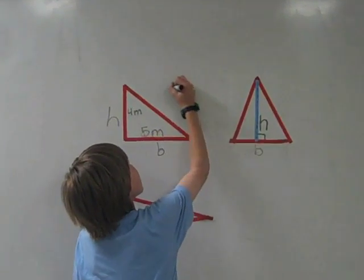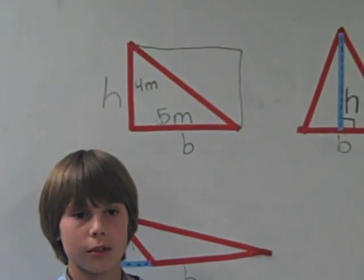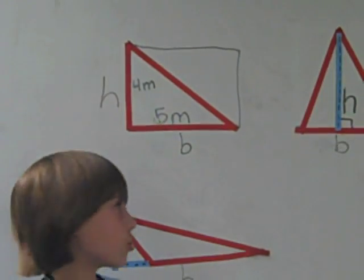Two triangles can make one rectangle. So you're going to use the same formula as the rectangle, but divide it by two for the two triangles.